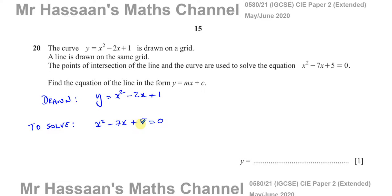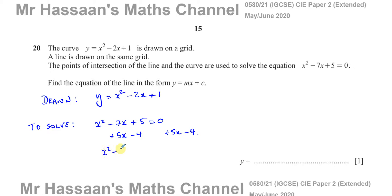So if I modify this such that it looks like x squared minus 2x plus 1, whatever I have done to change one side of this equation, I must do the same to the other side. I need to make minus 7x become minus 2x — that will happen if I add 5x. But then I also have to add 5x to the other side. I also have to make 5 become 1, so I must take away 4 from this side of the equation. This now becomes x squared minus 2x plus 1 equals 5x minus 4.